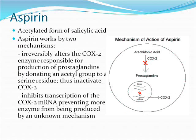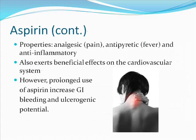Aspirin is the acetylated form of salicylic acid and works by two mechanisms. First, it irreversibly alters the COX enzyme responsible for production of prostaglandins by donating an acetyl group to a serine residue, thus inactivating COX. Second, it inhibits transcription of COX-2 mRNA, preventing more enzymes from being produced by an unknown mechanism. Properties of aspirin include analgesic, antipyretic, and anti-inflammatory effects. Aspirin also exerts beneficial effects on the cardiovascular system; however, prolonged use increases GI bleeding and ulcerogenic potential.